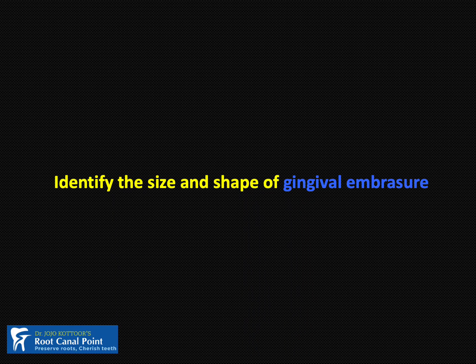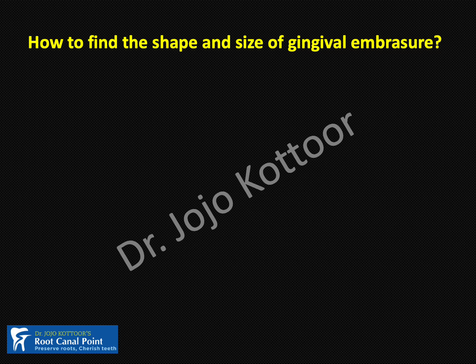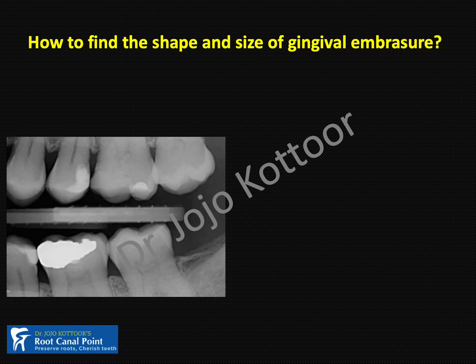Next, we need to identify the size and shape of the gingival embrasure, which determines the height of the wedge we are selecting. Take an IOPA, preferably a bitewing radiograph. Have a look at this bitewing radiograph. If you want to do a class 2 restoration here, you need a smaller wedge. Whereas here, you need a medium size wedge, and here you need a large size wedge.